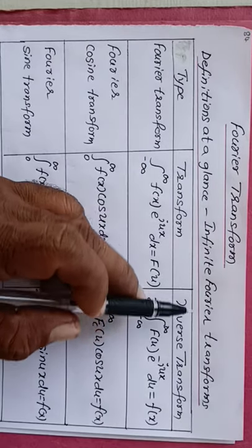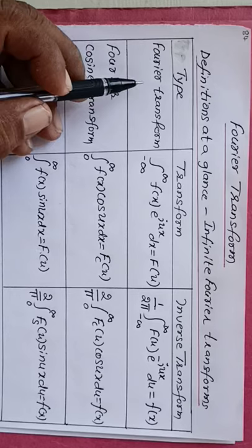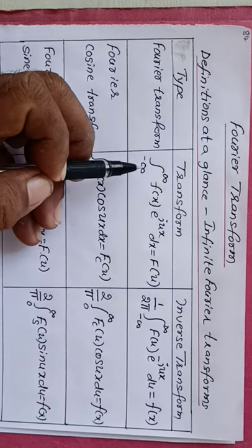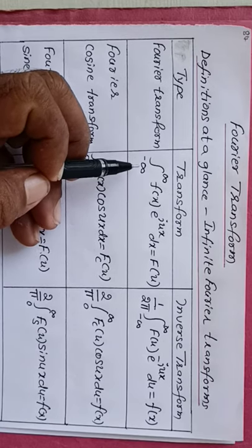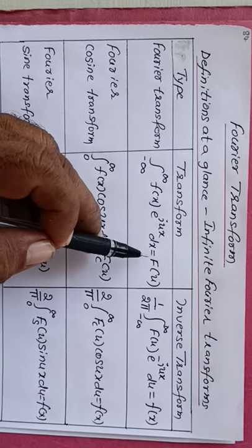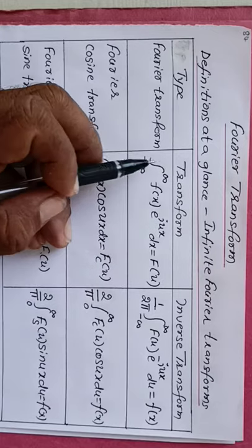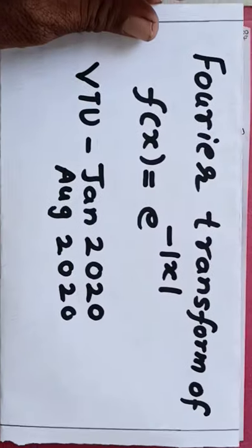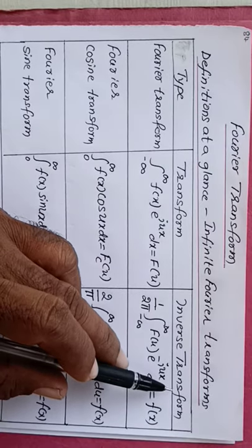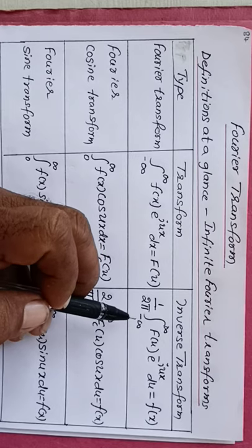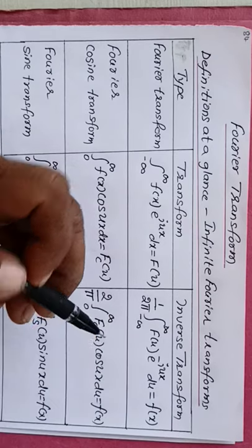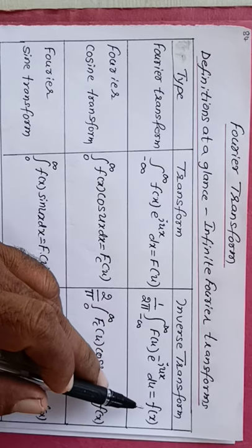Definitions at a glance — infinite Fourier transform. The Fourier transform formula is: F(u) equals integration from minus infinity to infinity of f(x) e raised to iux dx. For the inverse transform, the formula is: f(x) equals 1 upon 2 pi, integration from minus infinity to infinity of F(u) e raised to minus iux du.